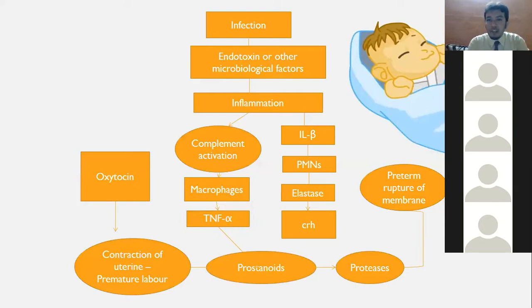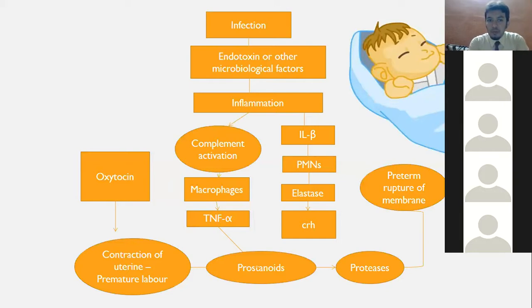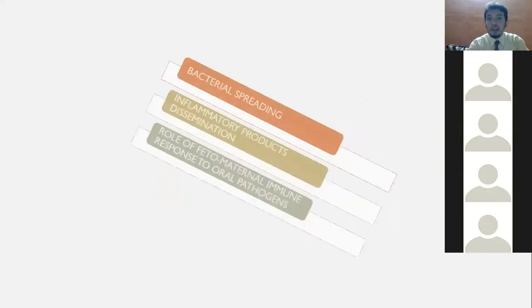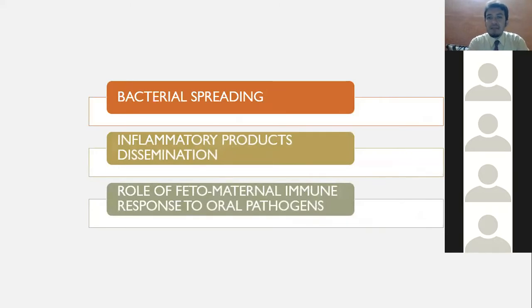When there is infection, endotoxins are released. The most important endotoxin in periodontal disease is lipopolysaccharide (LPS). These endotoxins and microbial factors lead to inflammation, complement activation, macrophage activation, and TNF release. Inflammatory mediators are released which, combined with the oxytocin that normally stimulates uterine contractions, lead to premature labor and delivery. This is the core pathophysiology.